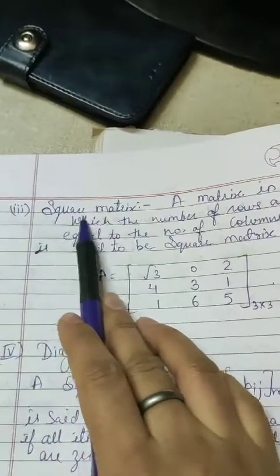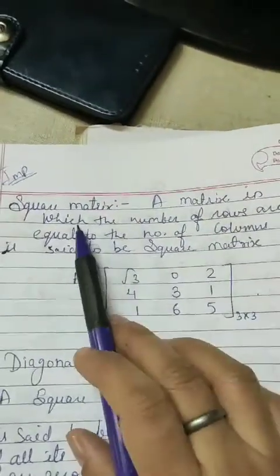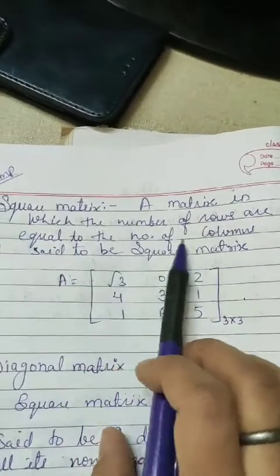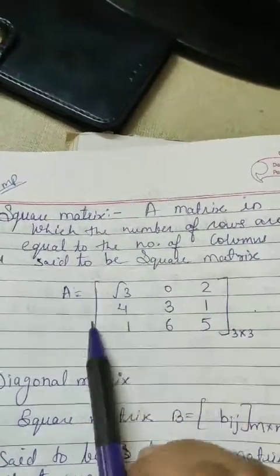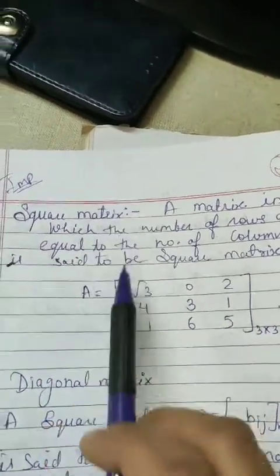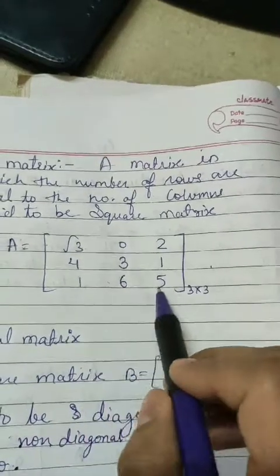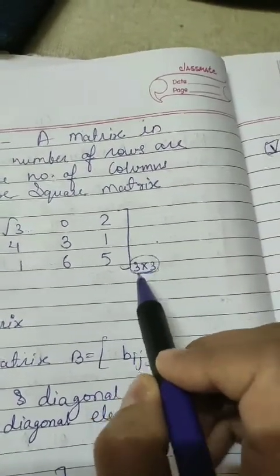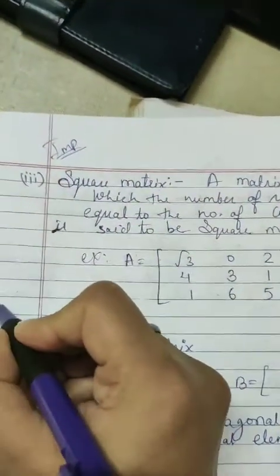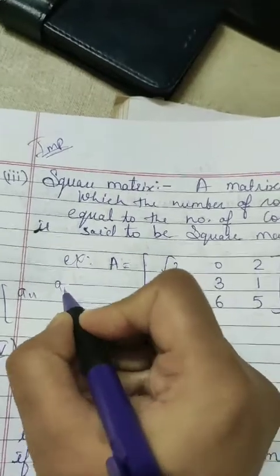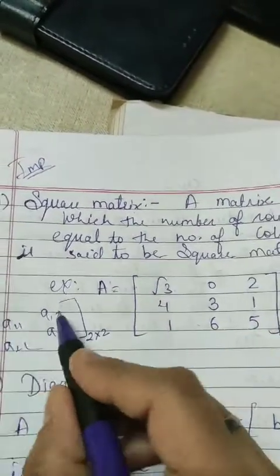Now moving on to the square matrix, which is a most important topic for our exam. A matrix in which the number of rows is equal to the number of columns is said to be a square matrix. For example, A equals the matrix with root 3, 0, 2, 4, 3, 1, 1, 6, 5 — this is a 3-by-3 matrix where rows and columns are equal. You can also write it as a11, a12, a21, a22 — this is a 2-by-2 square matrix.